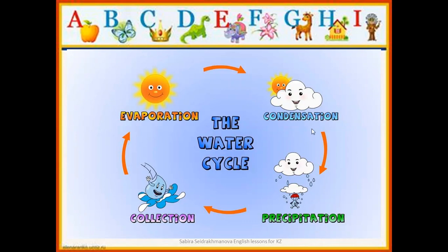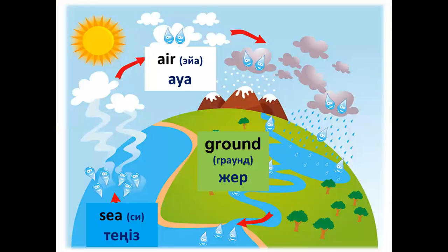Here are some new words: Collection, Evaporation, Condensation, Precipitation — what do they mean? We also need additional new words: Sea, Air, Ground. Let's look at these words from this and the previous slide.